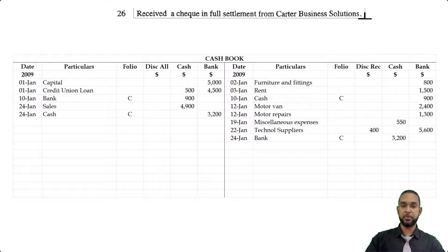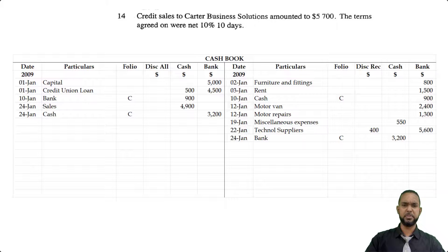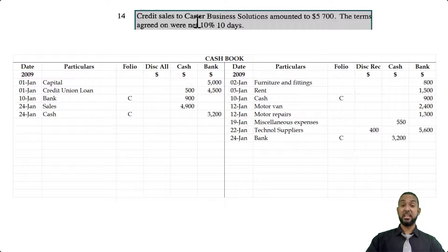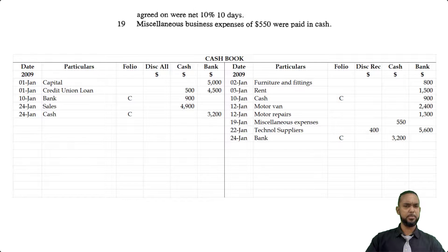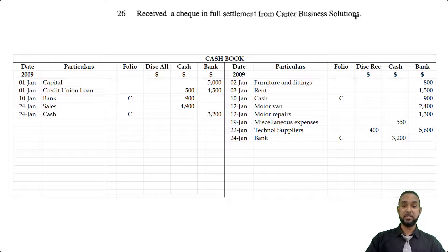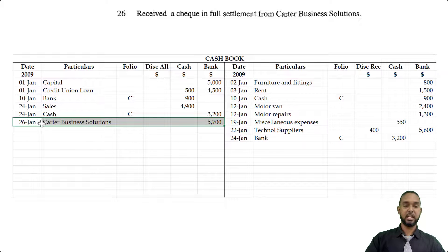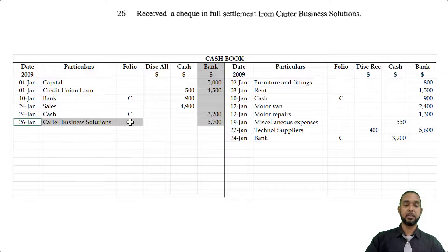On the 26th, we see a check in full settlement from Carter Business Solutions. Going back to the 14th, the original transaction was credit sales of $5,700, with a 10% discount if paid within 10 days. The original transaction was on the 14th and Carter paid on the 26th — so they're not entitled to a discount. The check in full settlement from Carter would be the full $5,700, shown on the debit side under the bank column with Carter Business Solutions as the particulars.